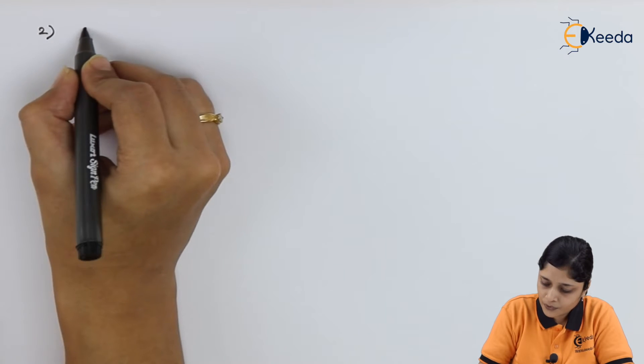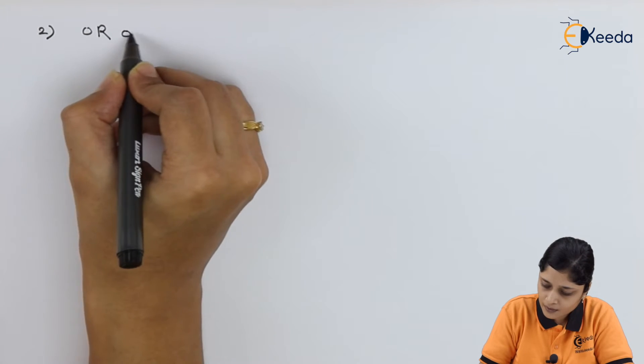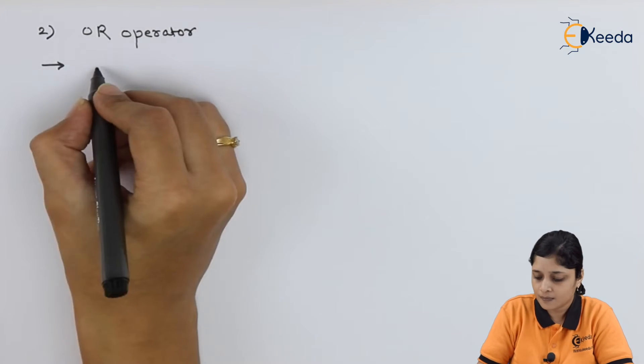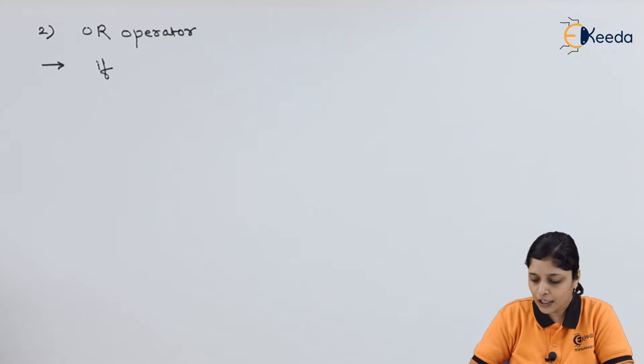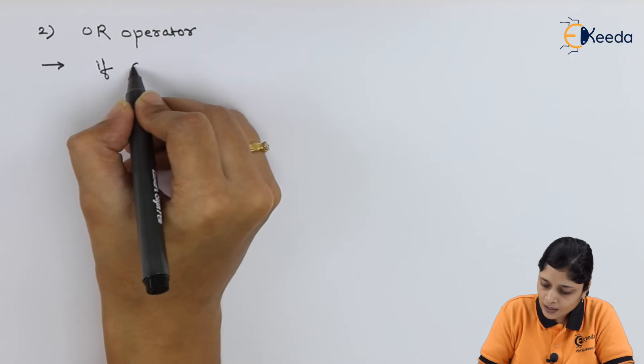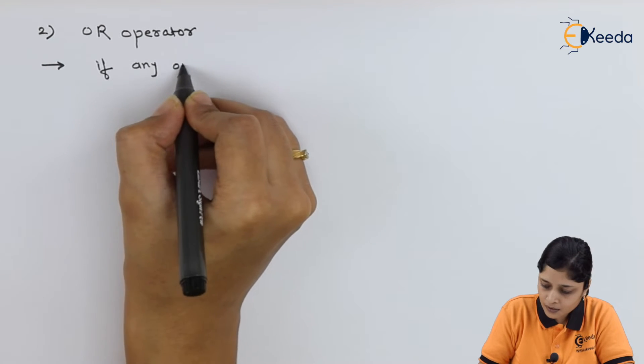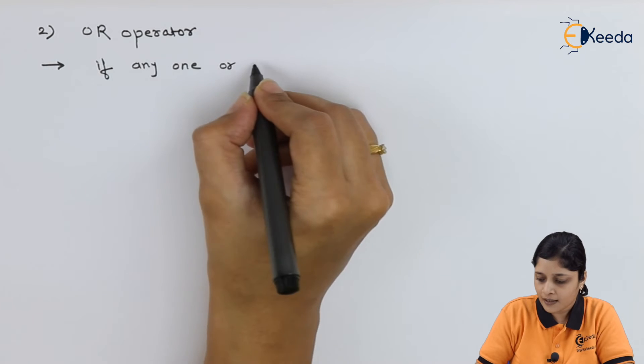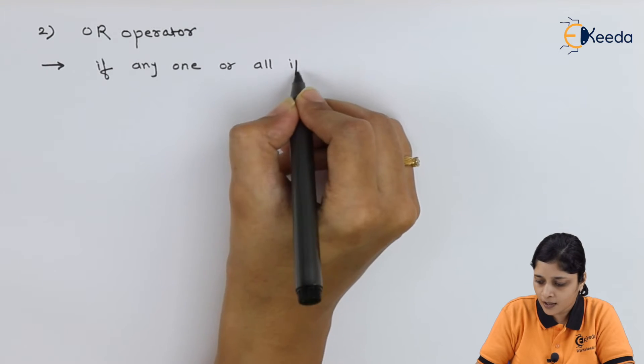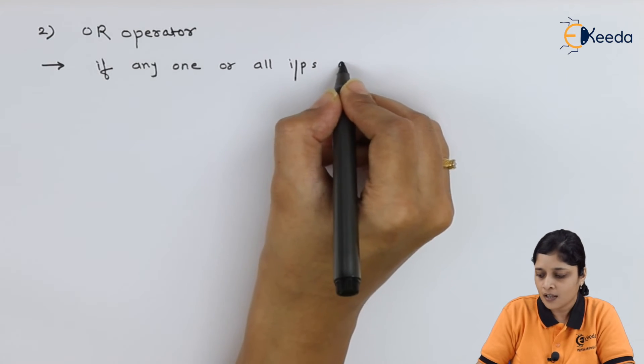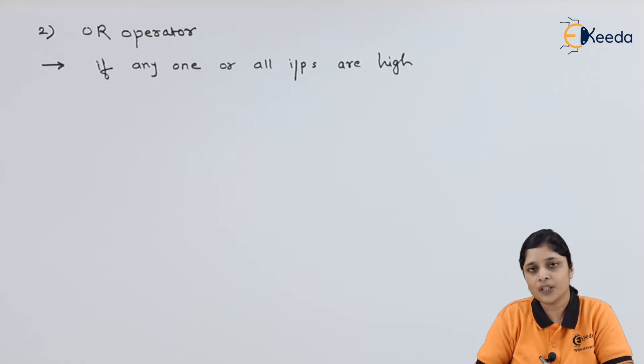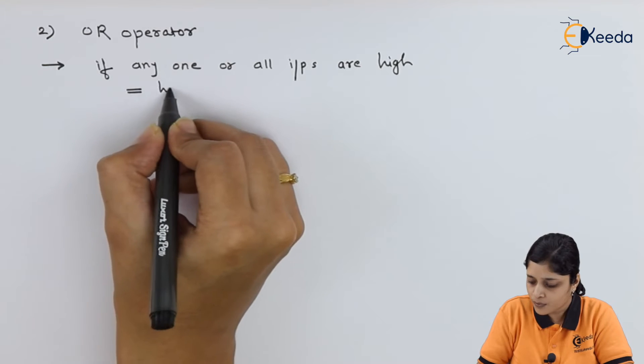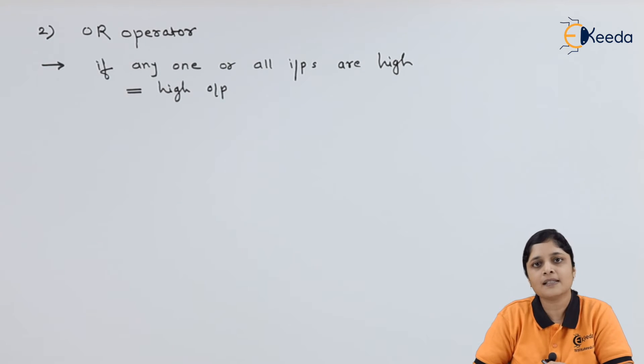The second operator we have is OR operator. For OR operator, the basic condition is if any one or all inputs are high, then only you will get high output. This is the main advantage of OR operator.